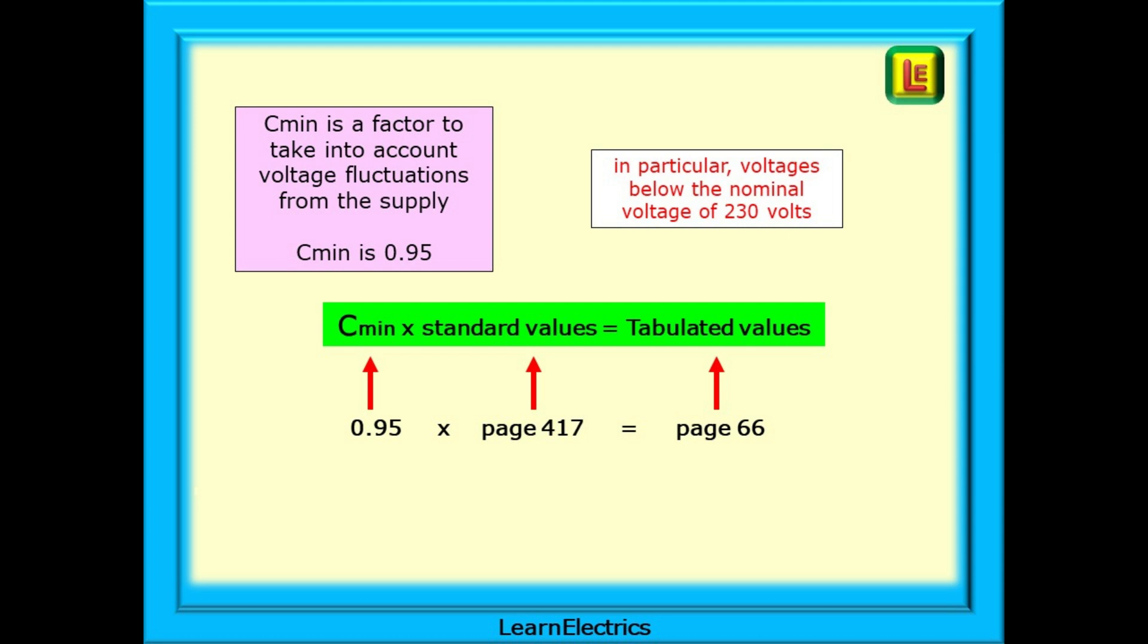That the voltage minimum might only be 95% of the nominal. We're interested in fluctuations below 230 volts because if the voltage reduces then the fault current will also reduce and we may not get our required 160 amps. If we multiply the standard values from page 417 by Cmin we will get the tabulated values as shown on this page.